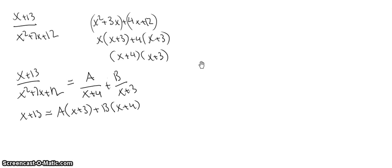And so now we're going to multiply it all out using the distributive property. And so we get ax plus 3a plus bx plus 4b.